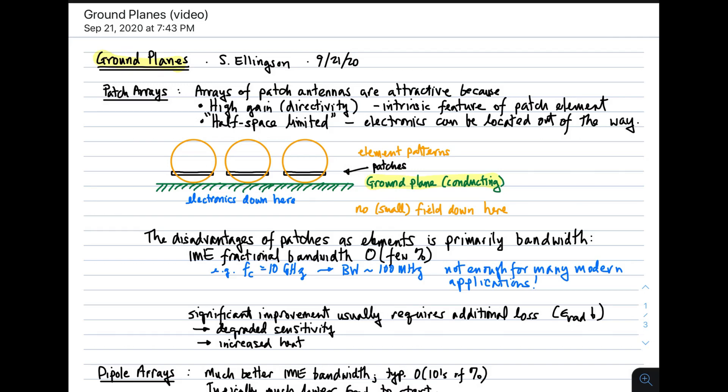Let's begin with patch arrays. An array of patch antennas is attractive as an array design for two reasons. One is because patch elements have high directivity. That's an intrinsic feature of the patch element. So if you want an array having high directivity, then it's attractive to use the patch as an element of the array.